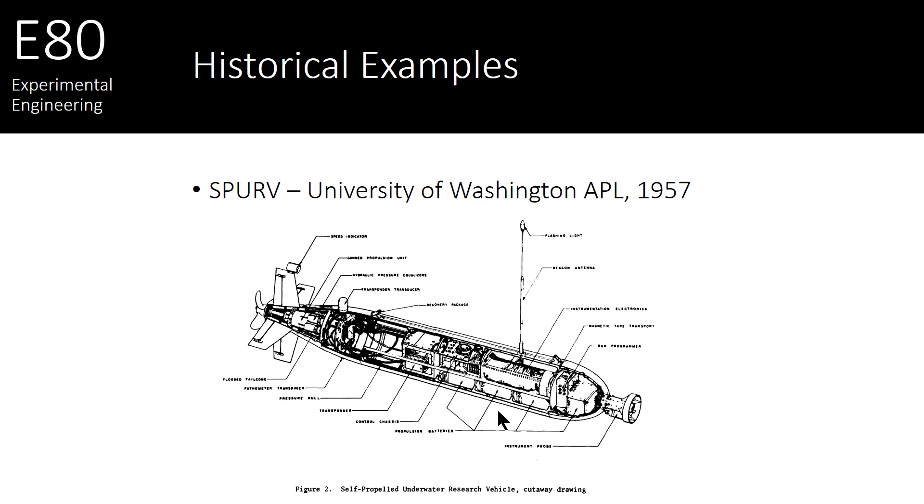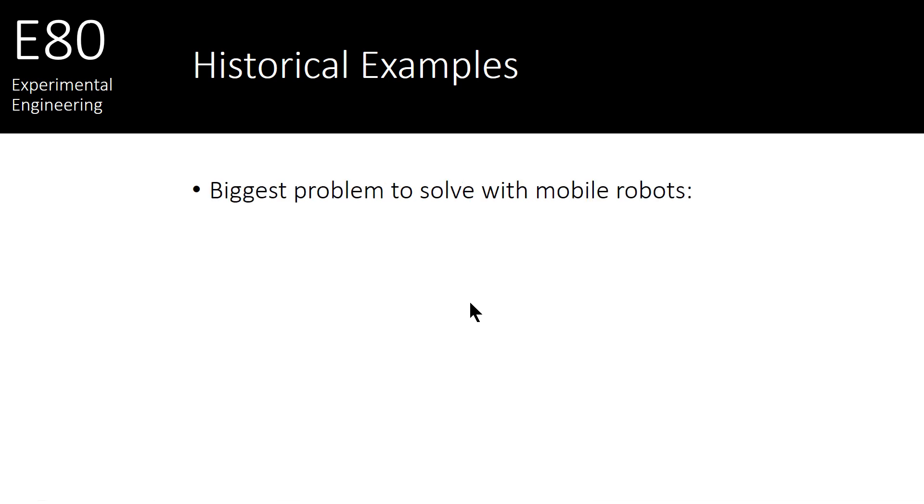These underwater robots had a lot of the same components of today's mobile robots. They've got battery power, a propulsion system, and some navigation system, which is sort of what's important to us today. In this particular vehicle, it used an acoustic transponder to actually communicate with the ship and follow it around. But this gets to the heart of the problem for mobile robots.